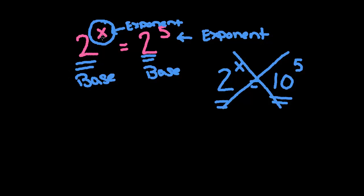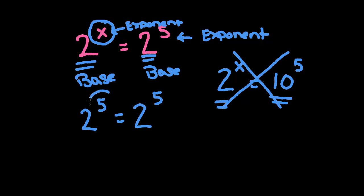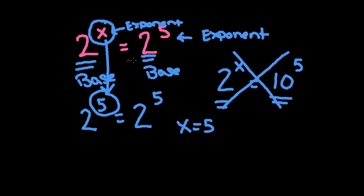In this case, we have 2 to the x equals 2 to the fifth. If we had 2 to the fifth, it's going to equal 2 to the fifth, because anything is equal to itself. So therefore, it makes sense to say that x could be 5, since if we put a 5 up here, then these two things are identical. So x is equal to 5. The shortcut here is that if we have the same base on both sides, we can just cross off those bases and set the exponents equal to each other and solve the equation.